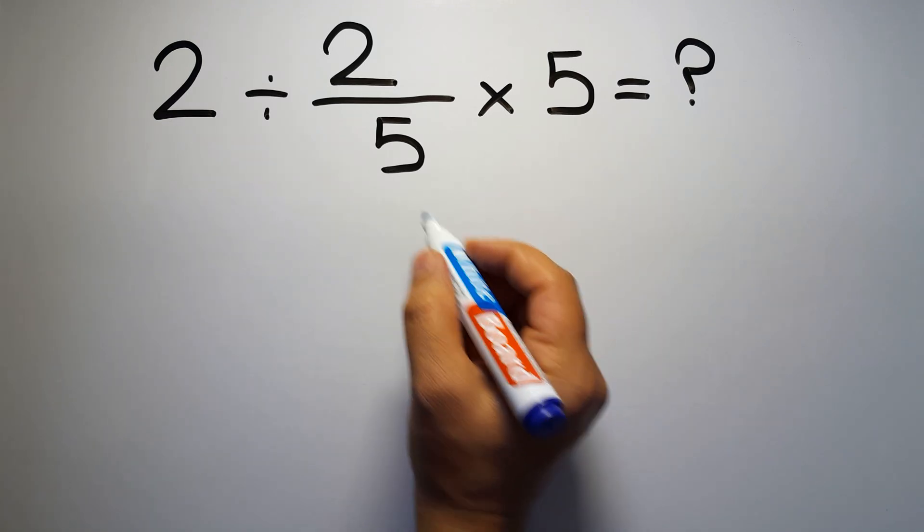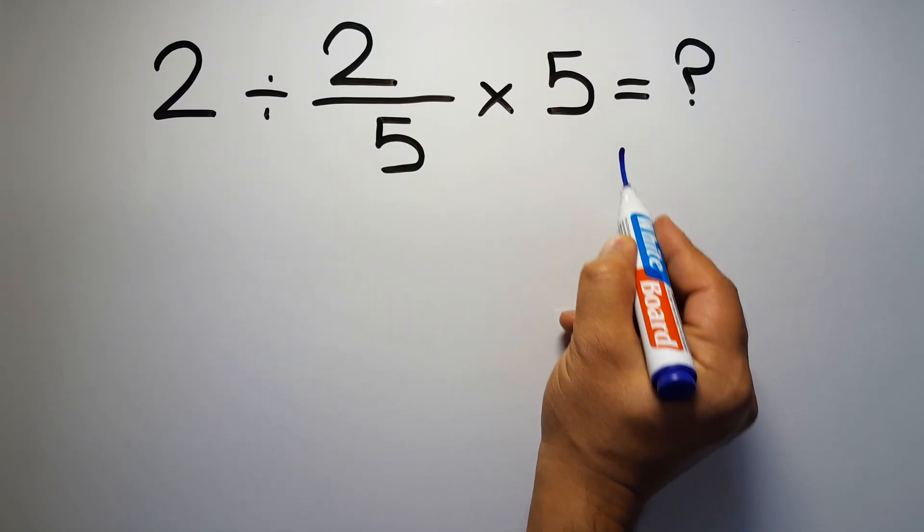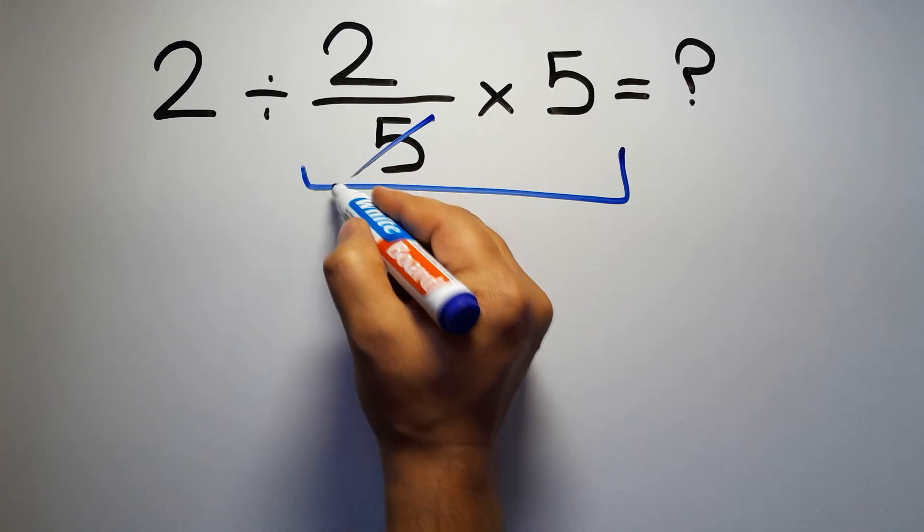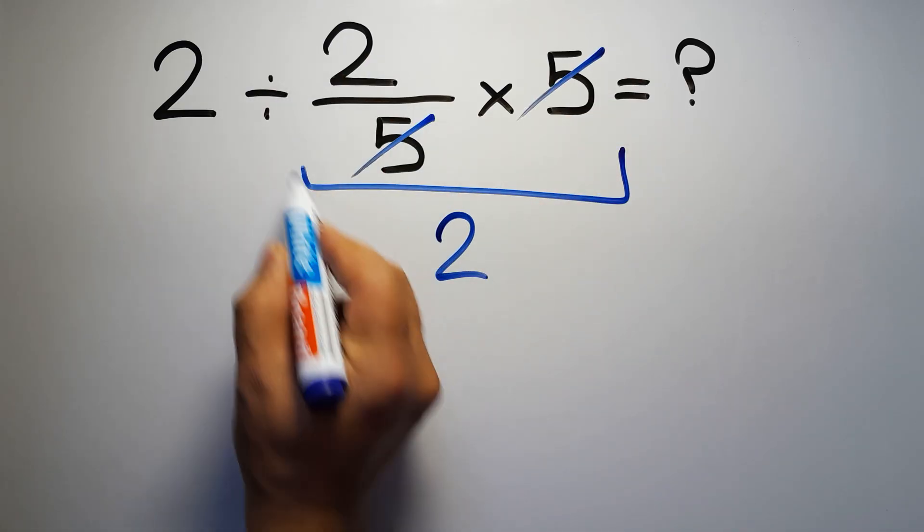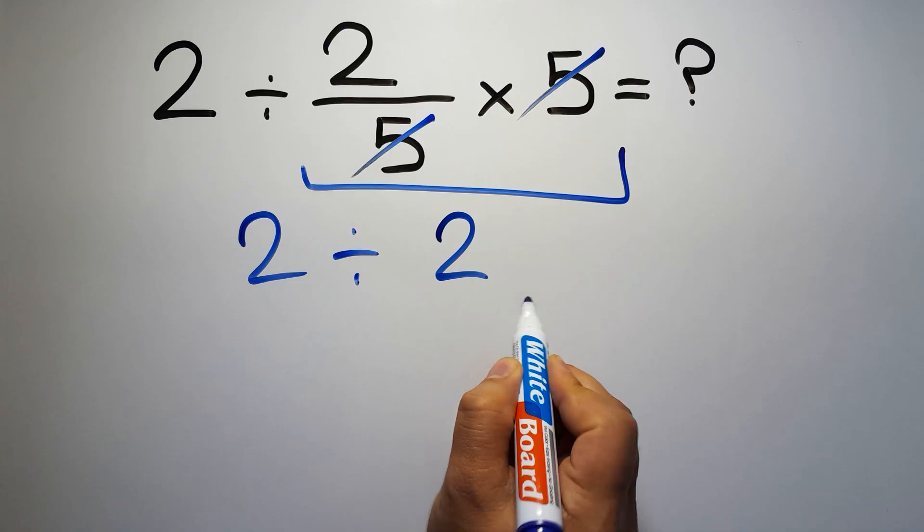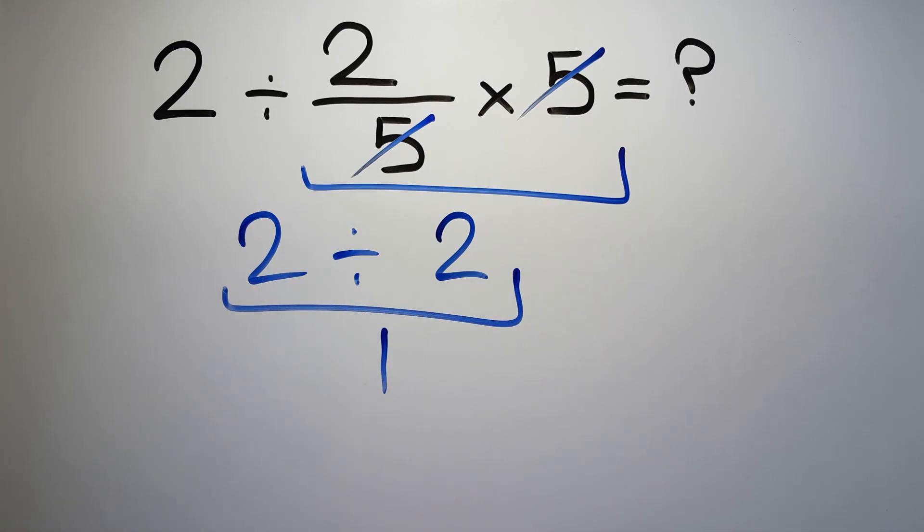First we do this multiplication, 2 over 5 times 5. We can easily cancel this 5 and this 5, so here we have just 2, and 2 divided by 2 is just 1. But this answer is not correct because